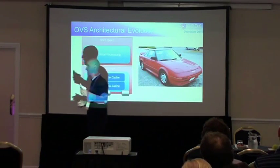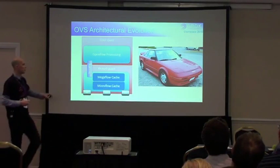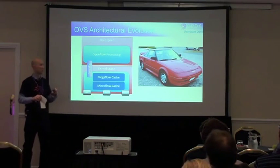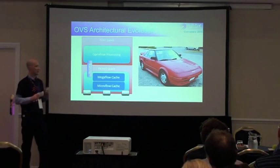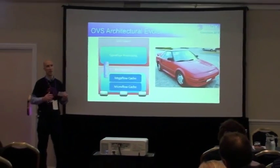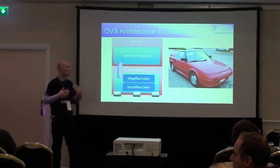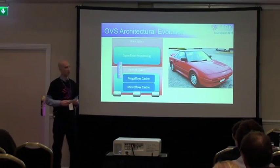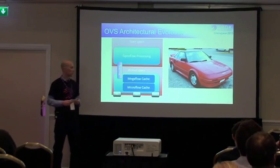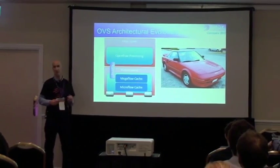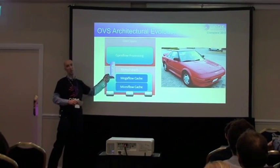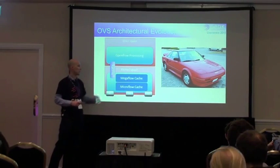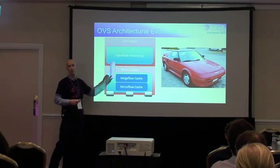In version 1.11, about a year and a half to two years ago, they introduced a mega flow cache to help improve performance. A mega flow cache is a wildcard classifier in the kernel data path, instead of the micro flow cache which was an exact match classifier. With a wildcard classifier, each entry can match more packets because a single entry can wildcard certain fields — many flows will match that single entry and won't have to traverse the Netlink interface up into user space, avoiding the context switch penalty. This gave better performance, particularly in the presence of many new flows being set up.